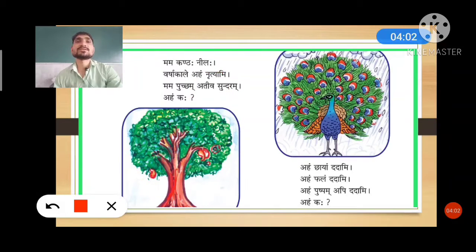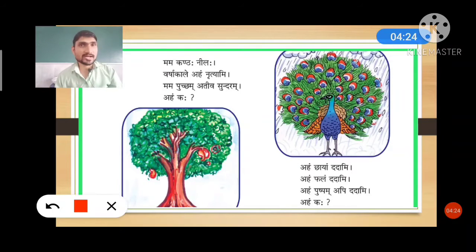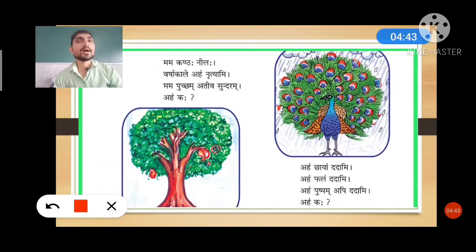Again, the concept: mama kantaha nilaha — my neck is blue. Varsha kale aham nrityami — at rainy time I dance. Mama puccham ativa sundaram — my feathers are very beautiful. Aham kaha — who am I? The answer, as you can see in the picture given in your book, is peacock.